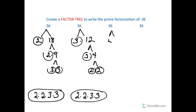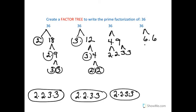How about if we went 4 times 9? 2, 2, 3, 3, and 36. Let's see. How about 6 times 6? Oops. Yep. 2 times 3, and 2 times 3. We get the same thing.